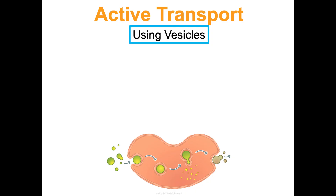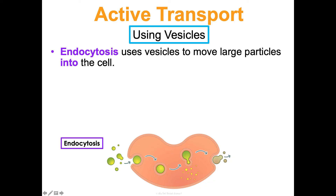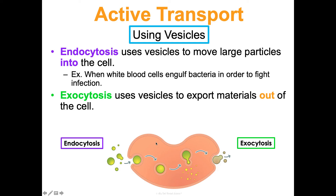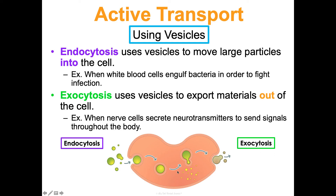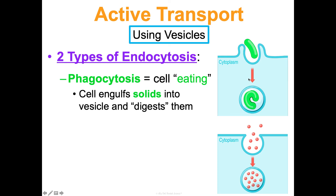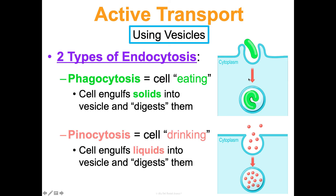The last two types of active transport involve vesicles — those little carts that move things around the cell. Endocytosis brings things into the cell using vesicles; this is how white blood cells engulf bacteria to fight infections. They create a vesicle around the object and then a lysosome destroys it. Exocytosis uses vesicles to export things out of the cell — for example, when nerve cells secrete neurotransmitters to send signals throughout the body. There are two specific types of endocytosis: phagocytosis, or cell eating, where the cell engulfs a solid into the vesicle and digests it; and pinocytosis, or cell drinking, where the cell engulfs liquids into the vesicle and digests them.